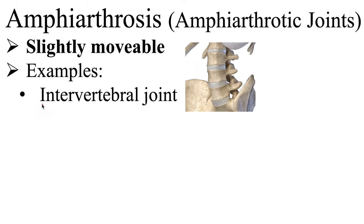For example, we have the intervertebral joints — thick, flat discs of fibrocartilage that lie between the vertebrae of the spinal column, allowing for limited movement between each disc. You may wonder how we can bend over and touch our toes if these joints have only limited mobility. Because there are so many of these amphiarthrotic joints in the vertebral column, the sum of them together allows us to achieve a much greater range of body movement, such as bending over and touching our toes.